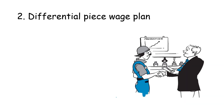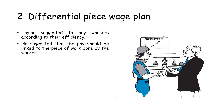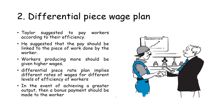The second important technique is the differential piece wage plan, also known as financial incentive. Taylor suggested that workers should be paid according to their efficiency, with pay linked to the piece of work done. For example, if two workers are assigned the same task and one produces 50 units while the other produces 80 units within the same time frame and conditions, the worker who produced 80 units should be paid more. Differential piece rate implies different rates of wages for different levels of efficiency, and a bonus payment should be made for achieving greater output.